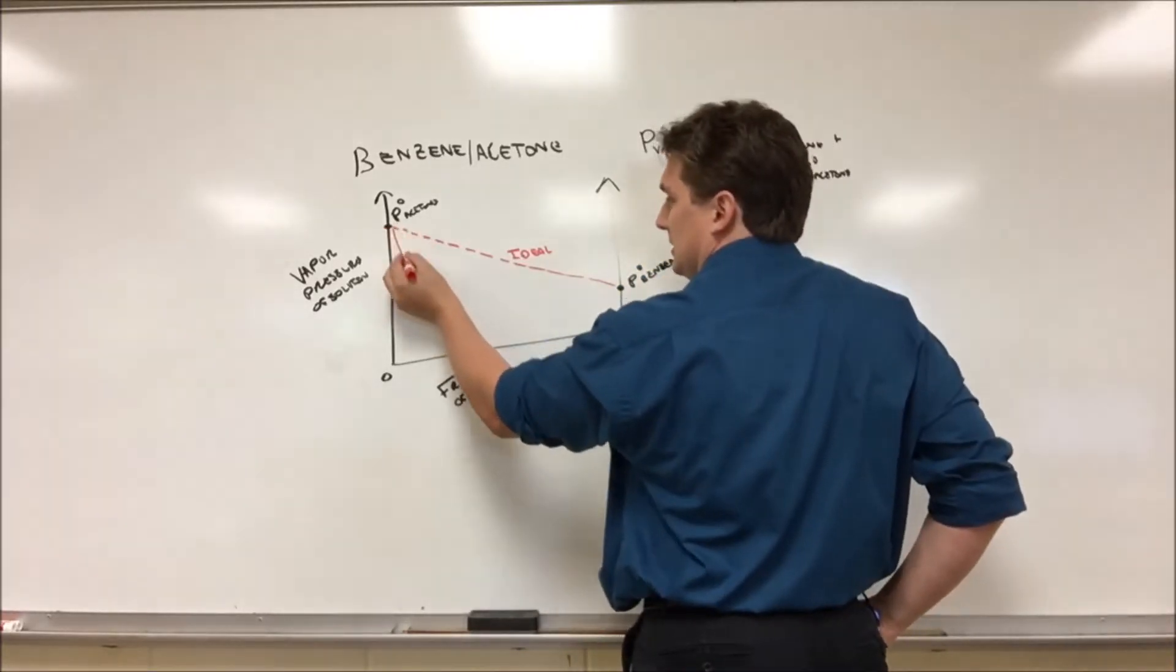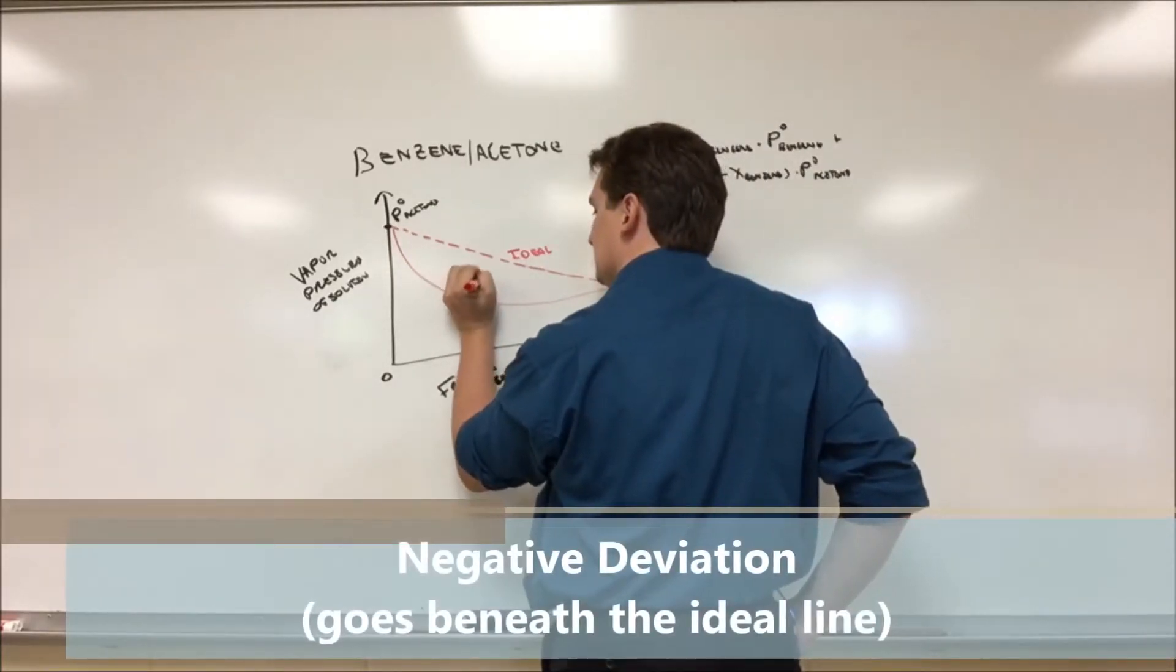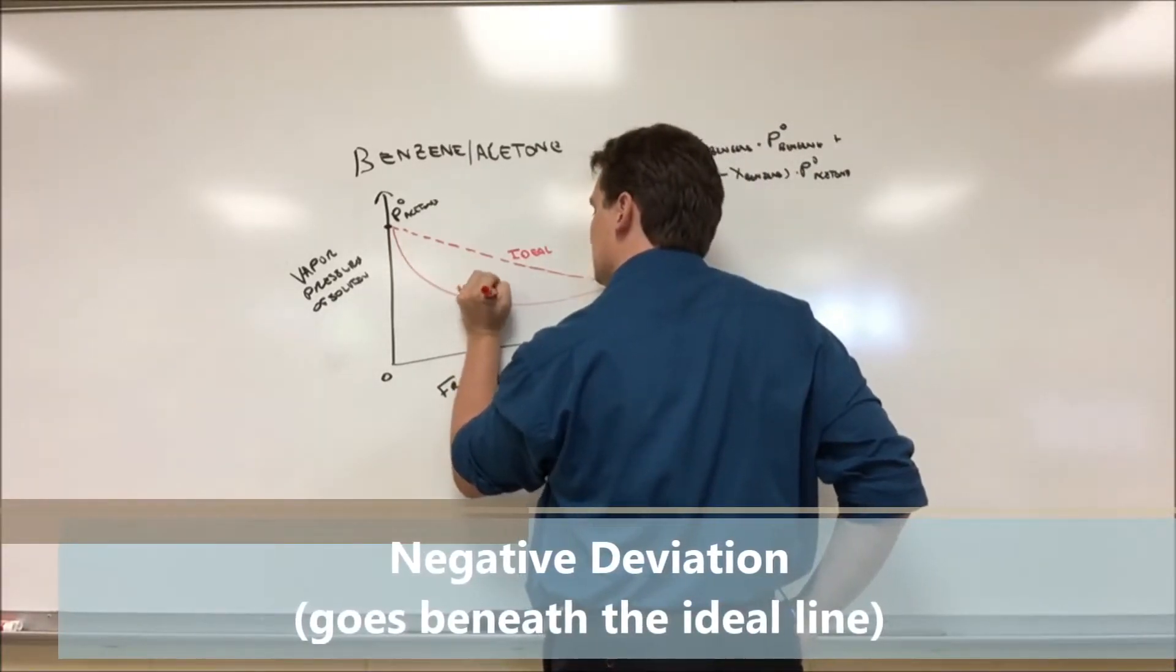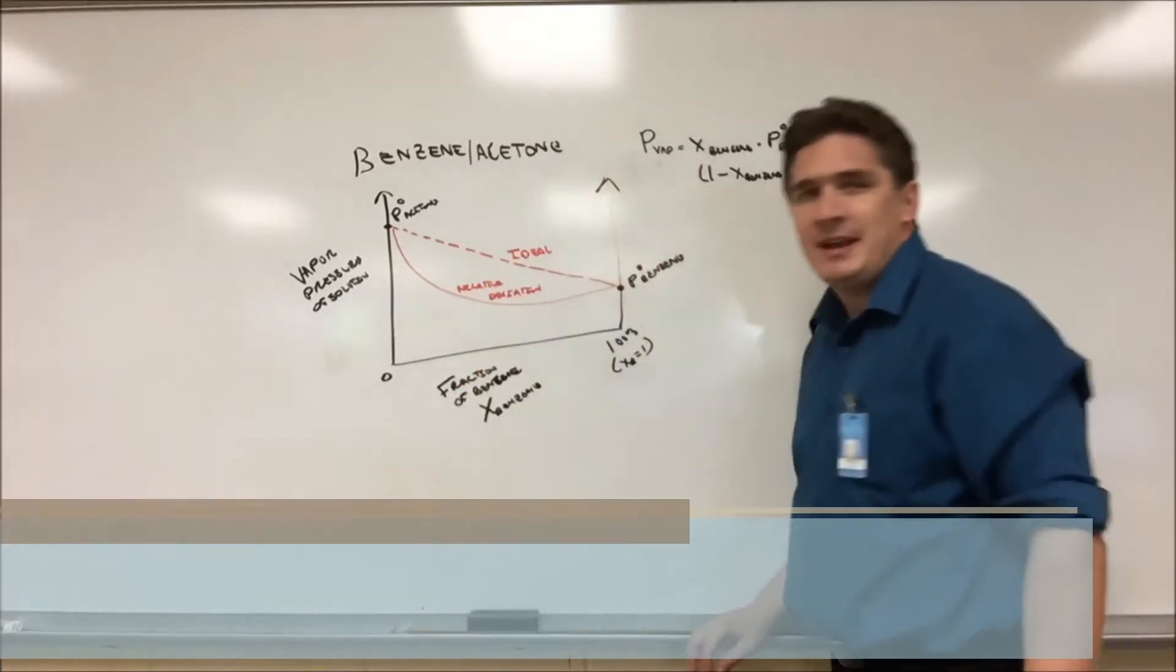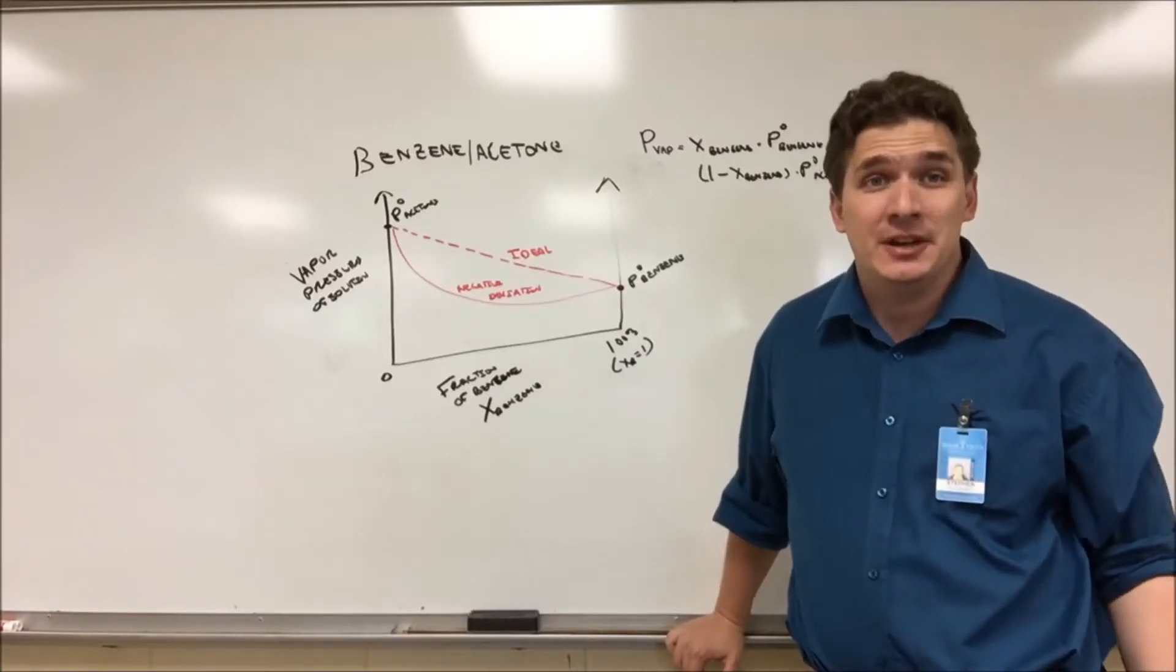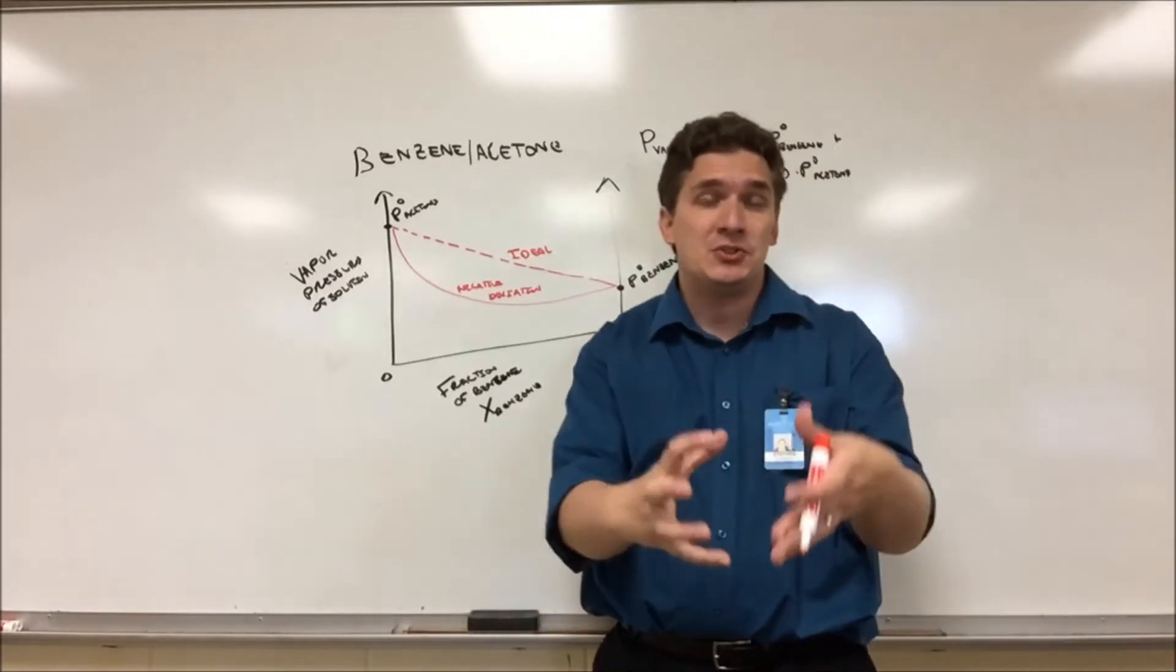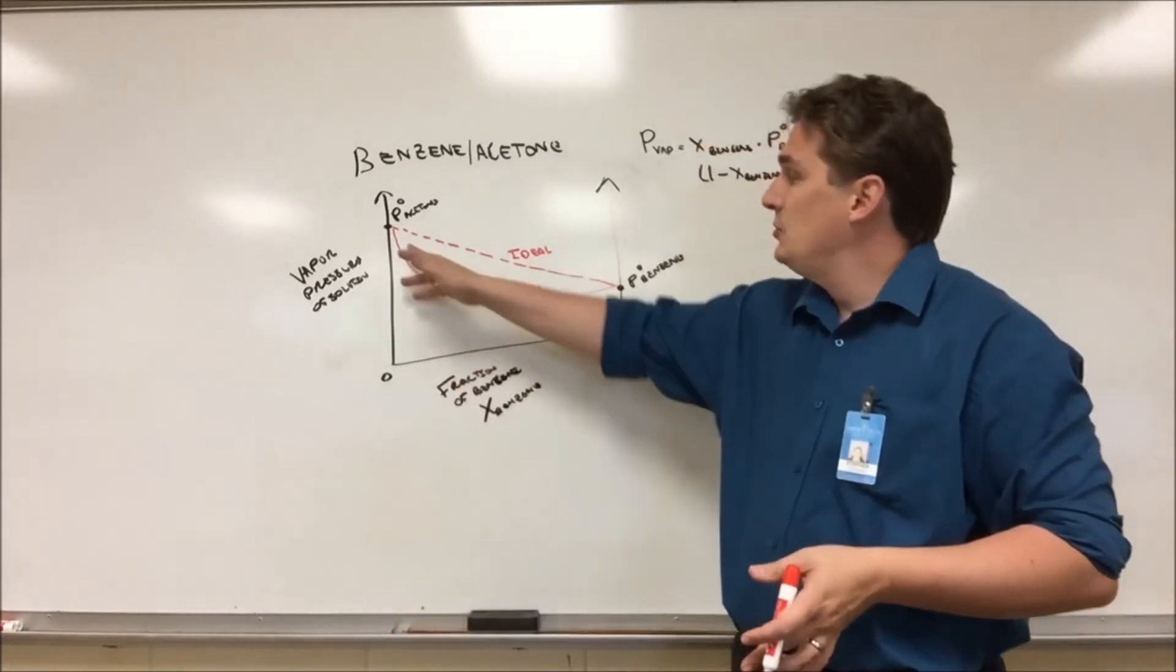So a negative deviation is basically where these two molecules really like each other, and what they'll do is they'll stick together. We get stronger IMF, and when we have stronger intermolecular forces, we get lower vapor pressures. And so when you see a negative deviation like this, this is typically when you have two solutions that are perfect for each other.